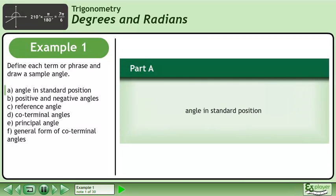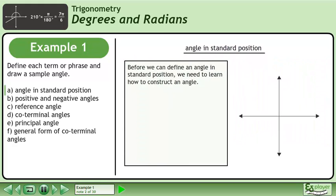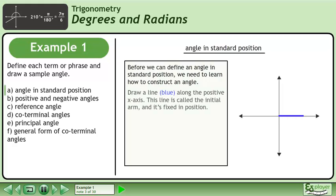Define each term or phrase and draw a sample angle. In Part A, we'll define an angle in standard position. Before we can define an angle in standard position, we need to learn how to construct an angle. Draw a line in blue along the positive x-axis. This line is called the initial arm and it's fixed in position.